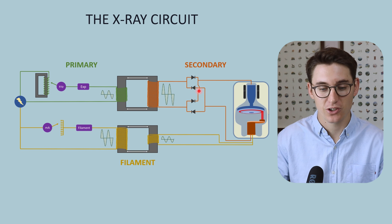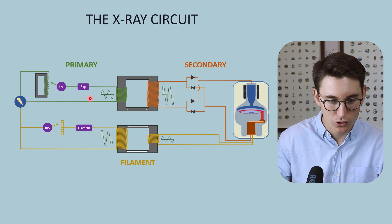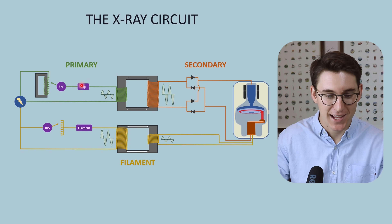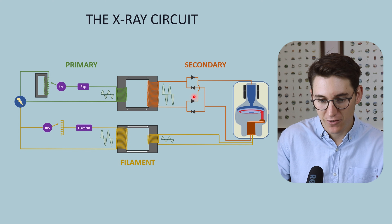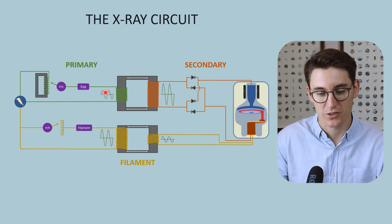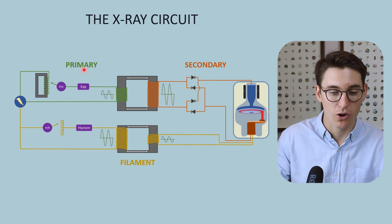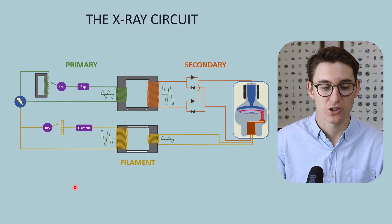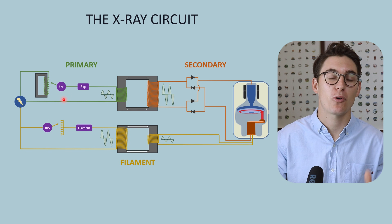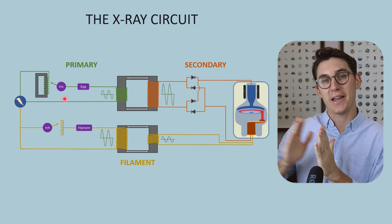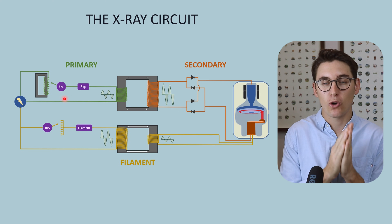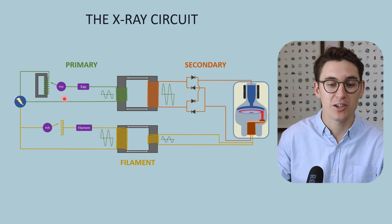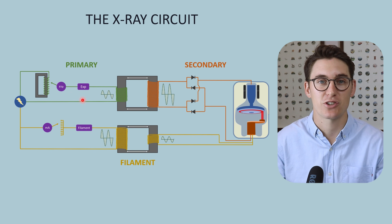Before moving to the secondary circuit, note that the controls we change — selecting kVp and exposure time — are in the low-voltage part of the circuit. We never manipulate anything within the high-voltage circuit, which is a key safety measure. We are only ever exposed to the low-voltage parts: the primary and filament circuits. These components come up repeatedly in exams because they have a major effect on the x-ray spectrum, particularly how changes in kVp and exposure time manipulate that spectrum.